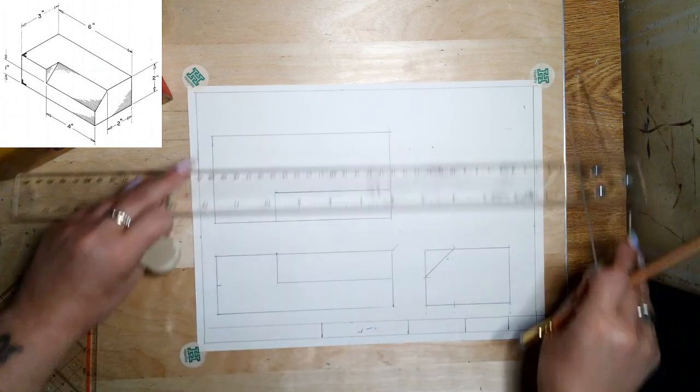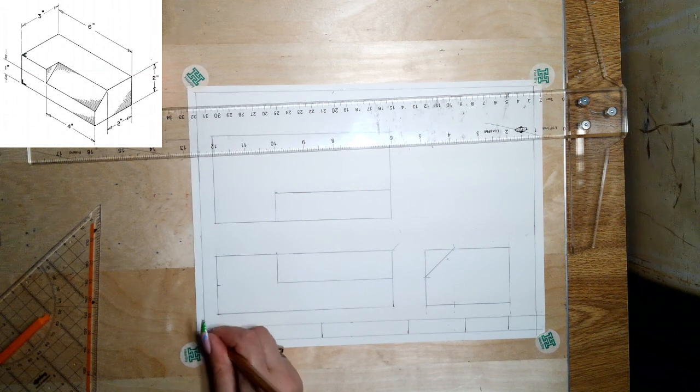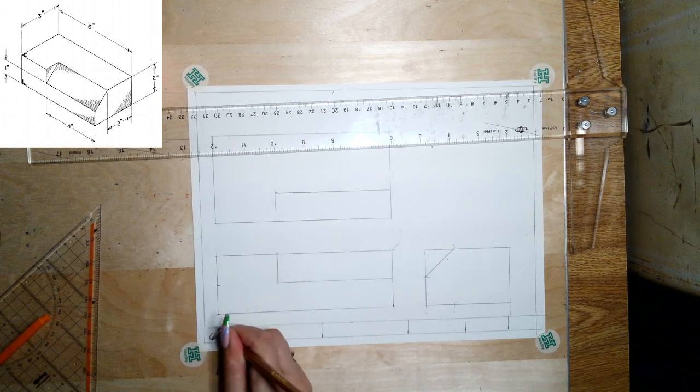So I'm going to erase my little miter line and I have this block as an orthographic. So then I'm going to letter in my title block. Again, neat, all caps. This is called the chamfered block.